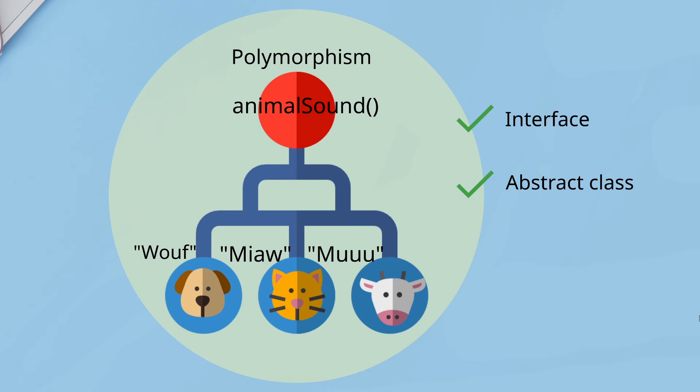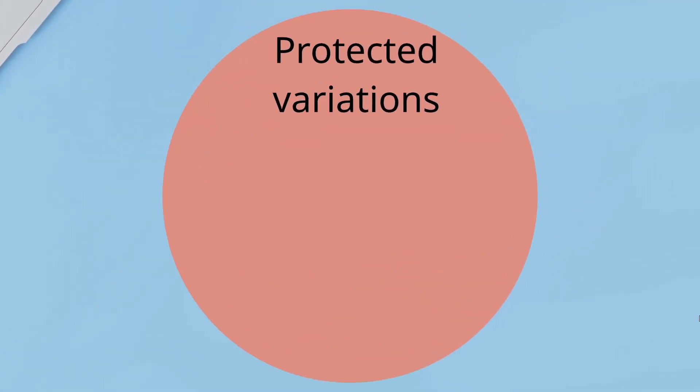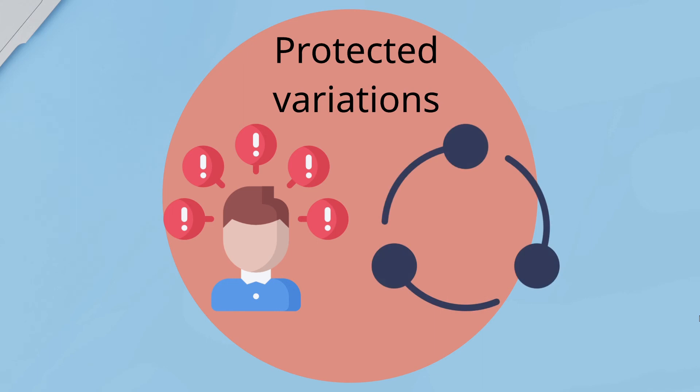More clear, right? Now talking about protected variations. It protects elements from the variations of other elements like objects, systems, subsystems by wrapping the focus of instability with an interface and using polymorphism to create various implementations of its interface.